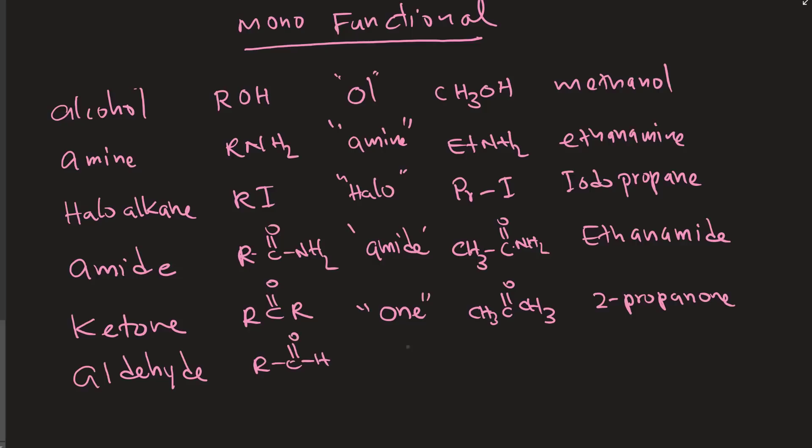The next one is aldehyde functionality, RC double bond O and H. And that's ending up with an L. One example is CH3C double bond O and H. That's two carbon ethan L.